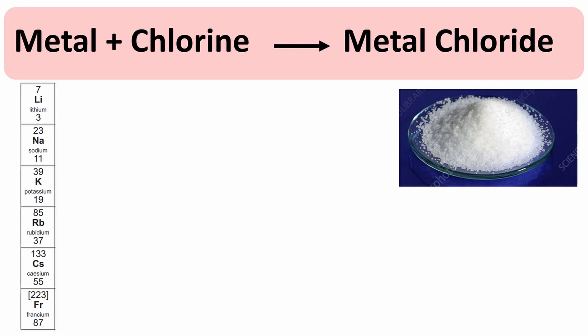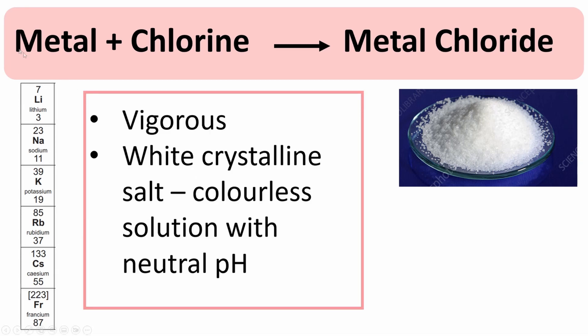The reactions between alkali metals and chlorine are very vigorous reactions. As you go down the group, the reactions become more and more vigorous because reactivity increases down the group.